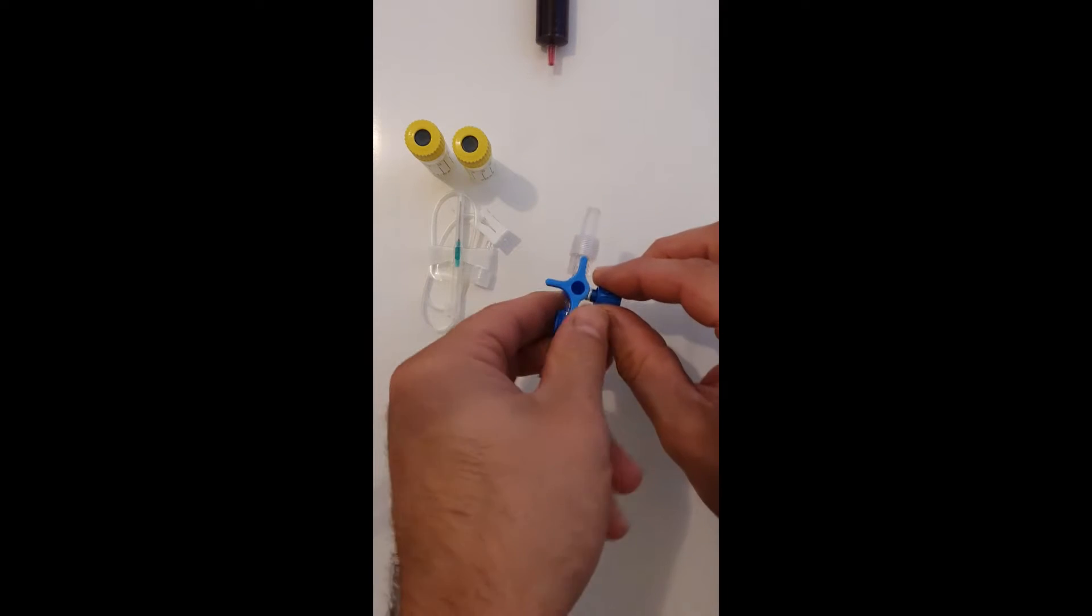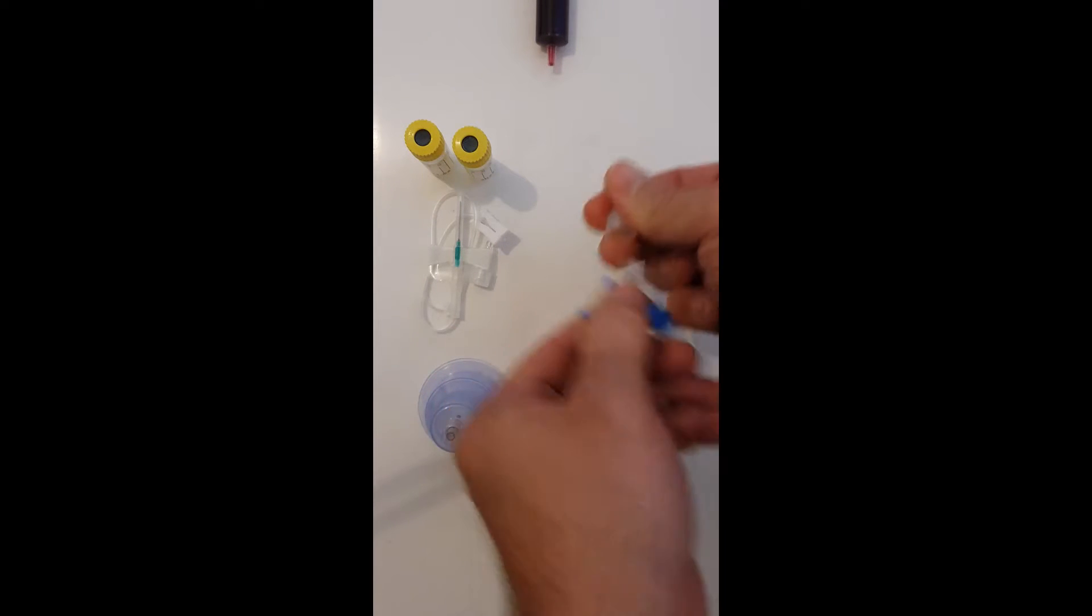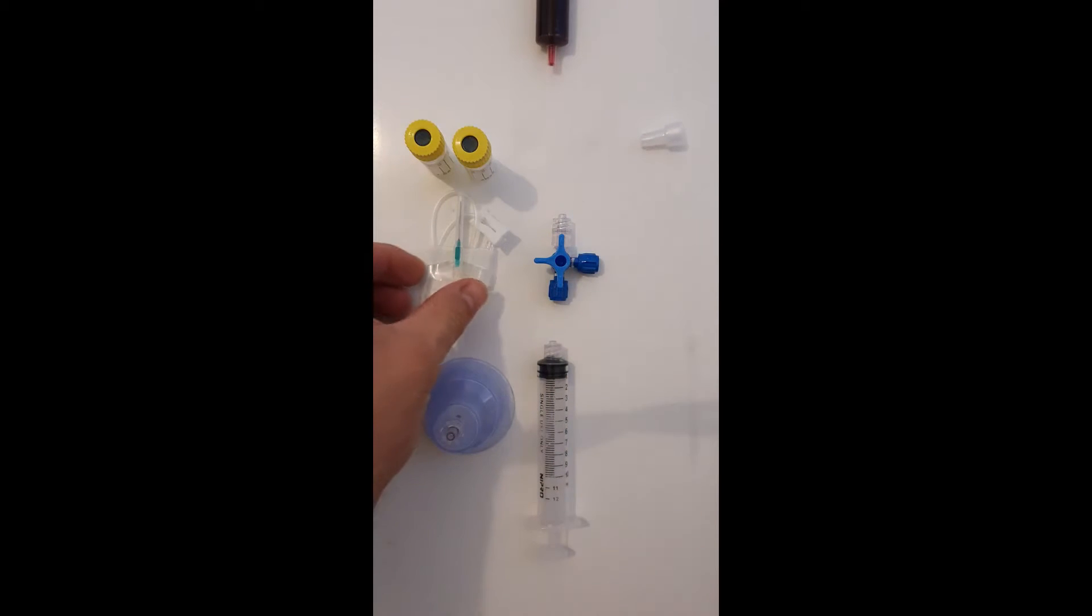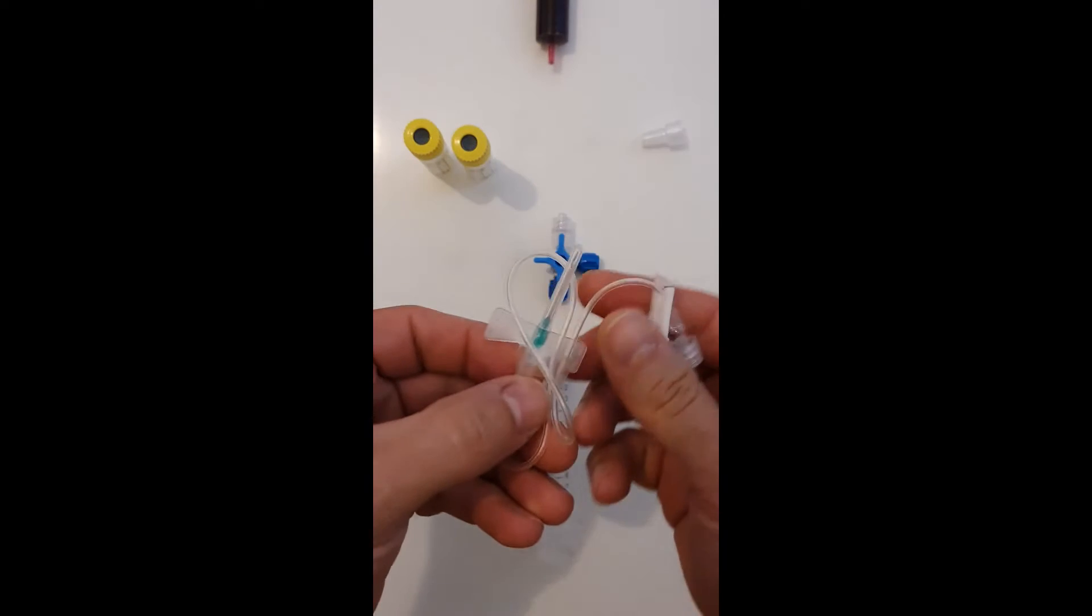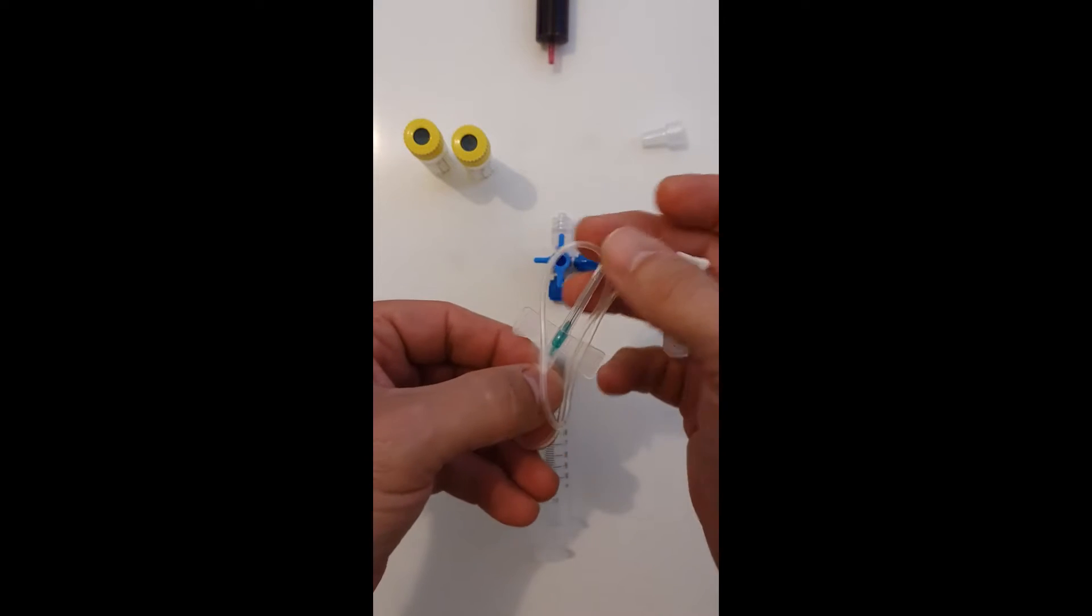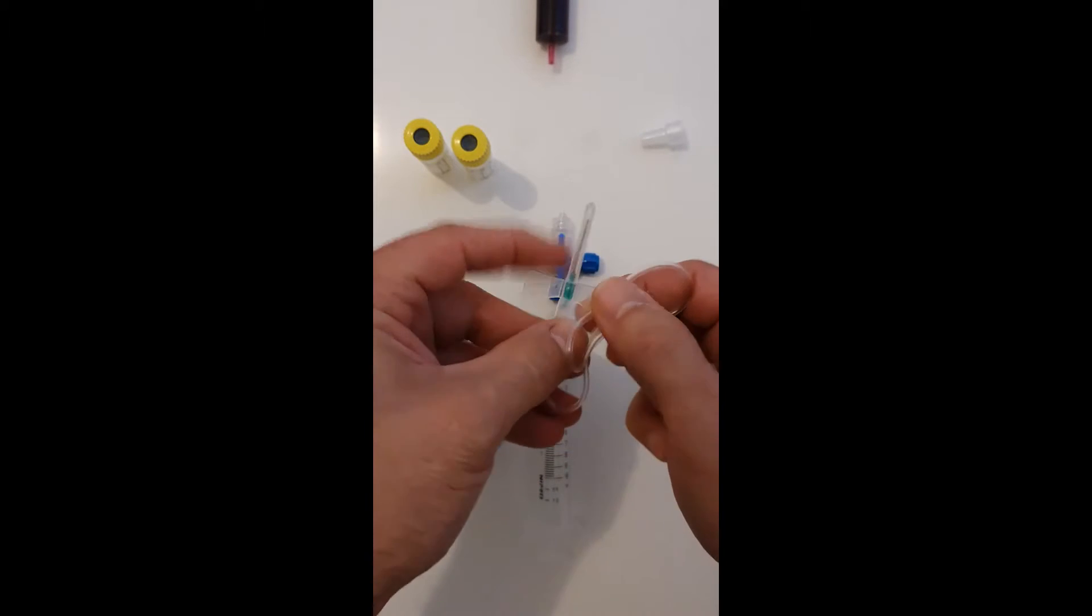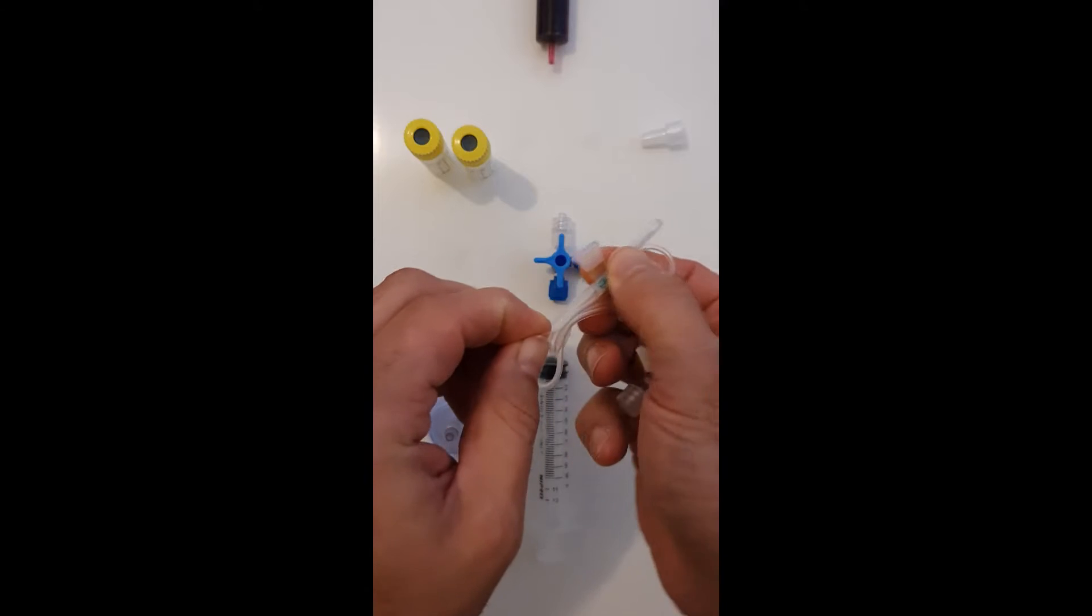What you're going to simply do is remove the end cap. You've then got the needle. As you can see, this is a safety butterfly needle. This is on a 30 cm tube.